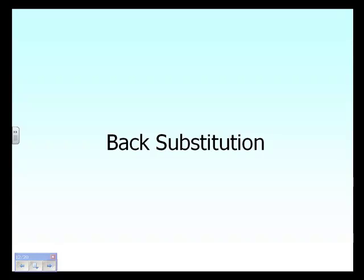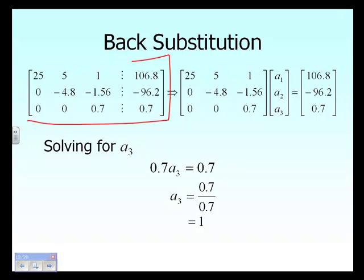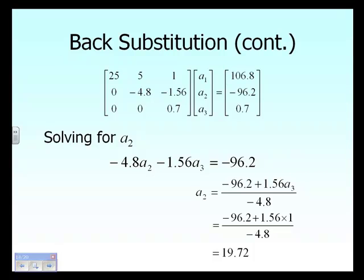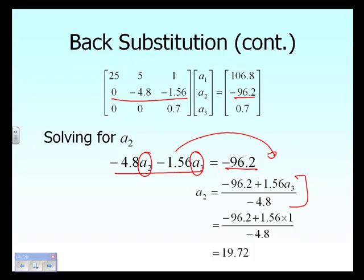Now we do back substitution to find the unknowns. Looking at the last equation, it can be written as 0.7 A3 equals 0.7, giving A3 equal to 1. For the second equation, we have minus 4.8 A2 minus 1.56 A3 equals minus 96.2. Since A3 is now known, we substitute its value of 1 and solve for A2, getting A2 equal to 19.72.